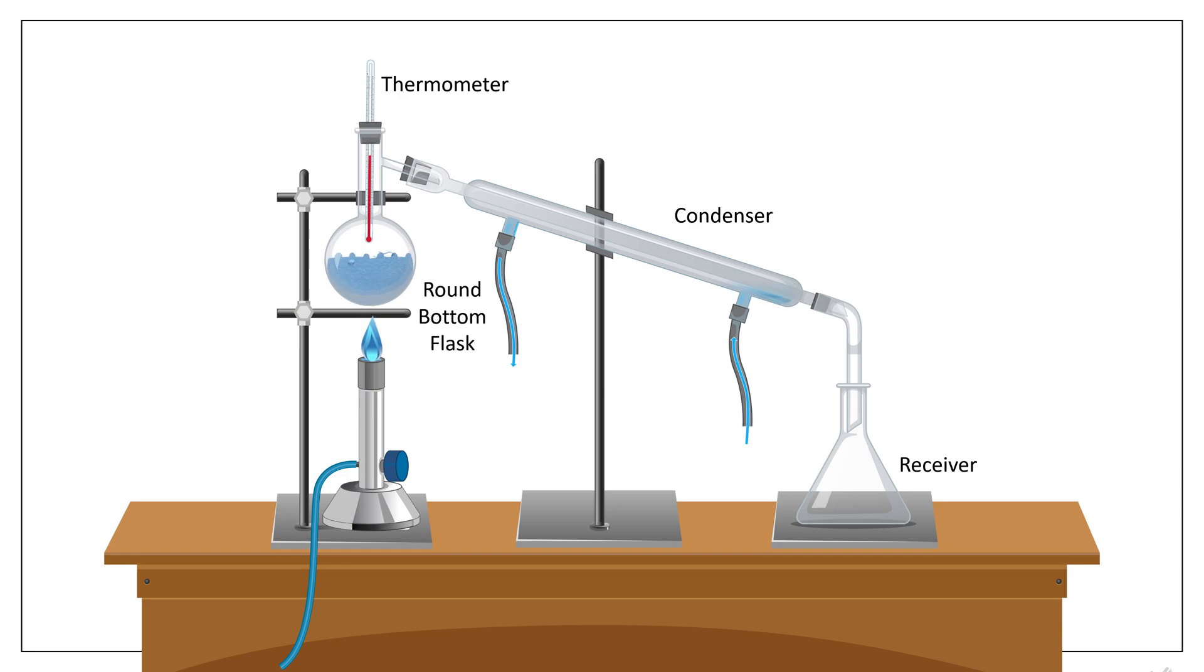Cold water is circulated through the jacket of condenser. The vapors in the condenser get condensed and collected into the receiving flask.